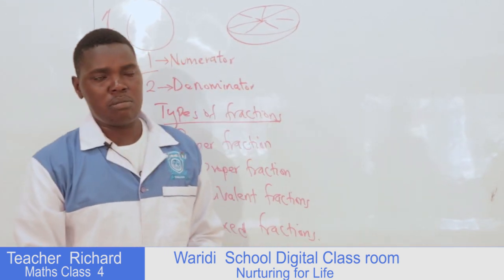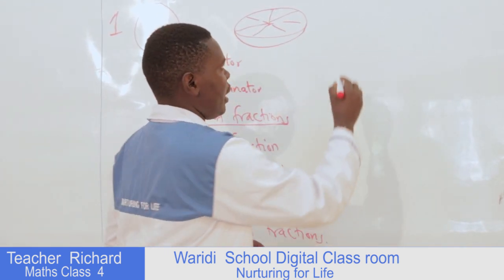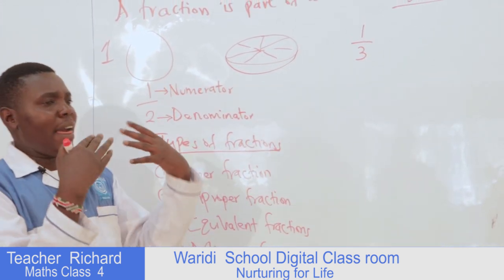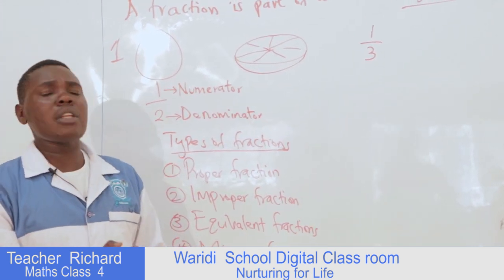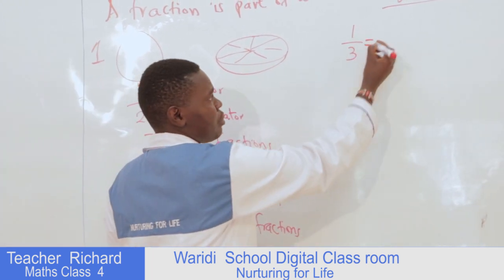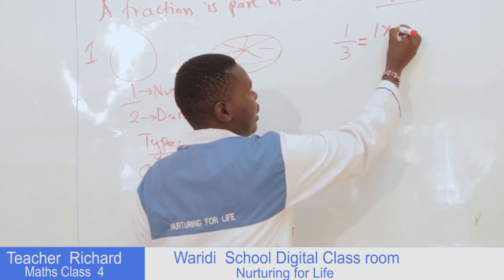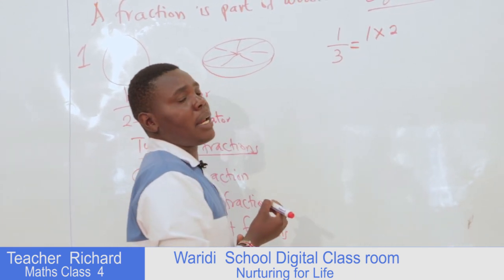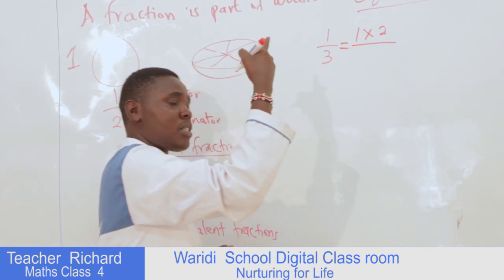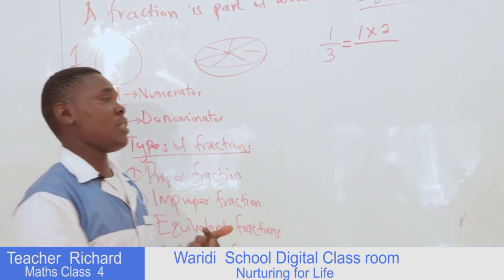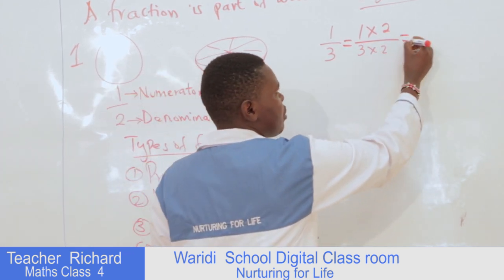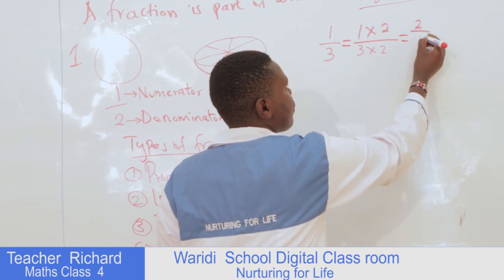For example, I have one out of three. You want to know the other fractions that are equal to one-third. This is the method we use: we take that one and multiply by a number — for example, two — and then what you do on the numerator side, you do the same on the denominator side. So you have three times two, and what you get is two out of six.